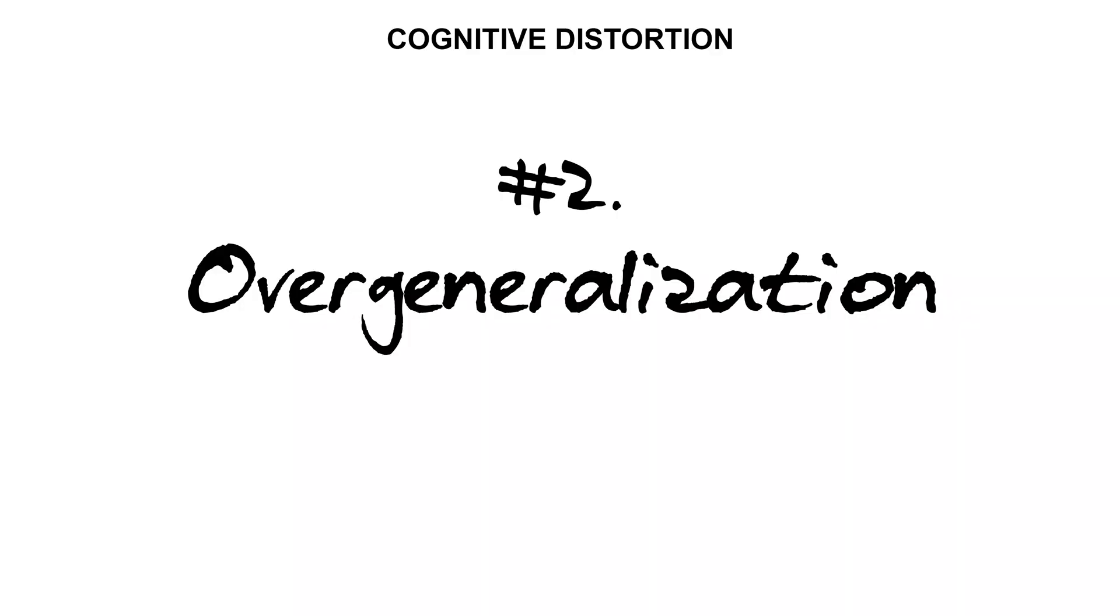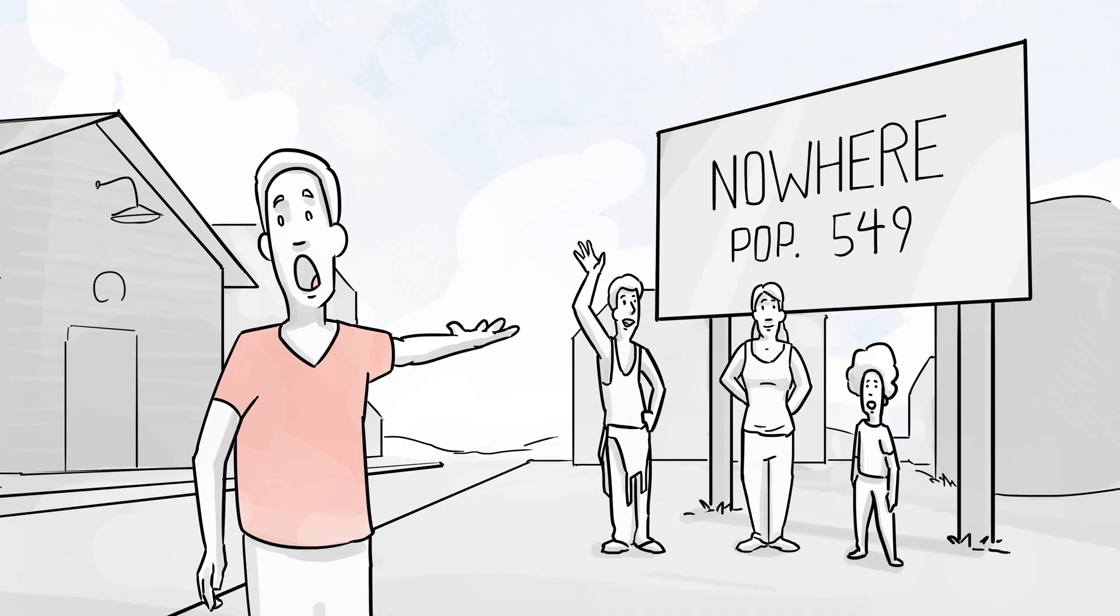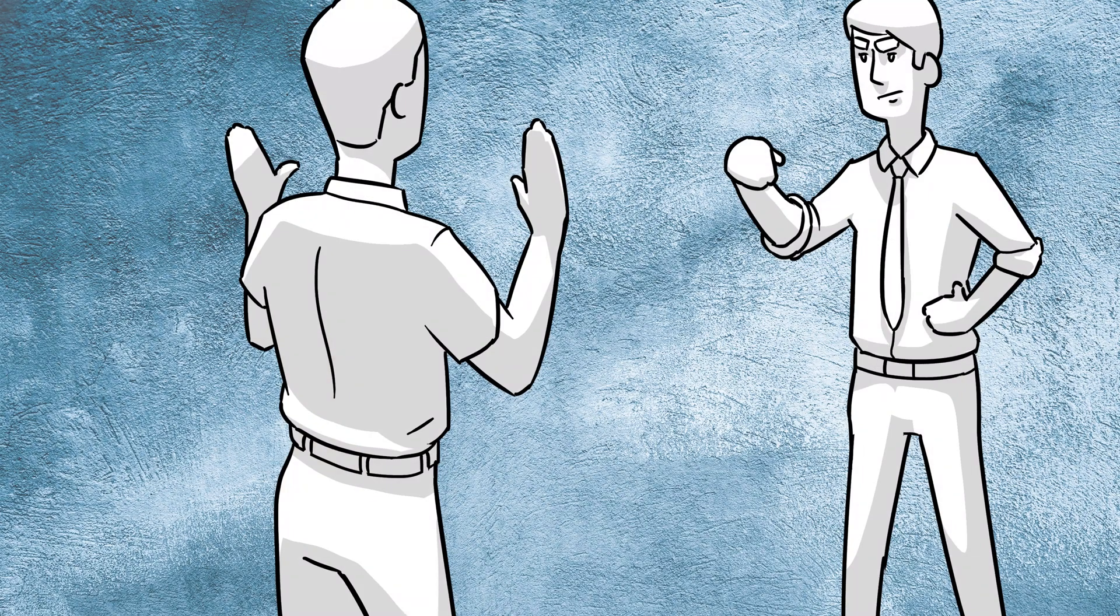Cognitive distortion number two, overgeneralization. If something happens once, it will happen over and over again. Keywords here are always and never. I'm always bored in small towns. I can't be friends with anyone younger than 30 because they're all too immature. These, of course, are overgeneralizing or blanket statements that keep us engulfed in limitation and negative thinking.